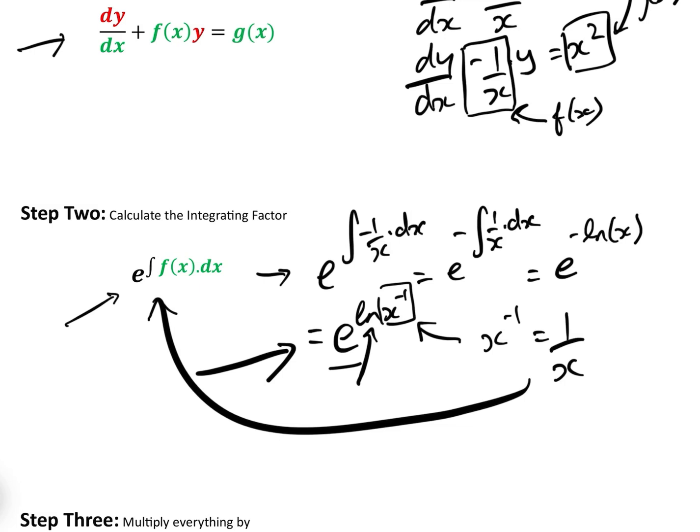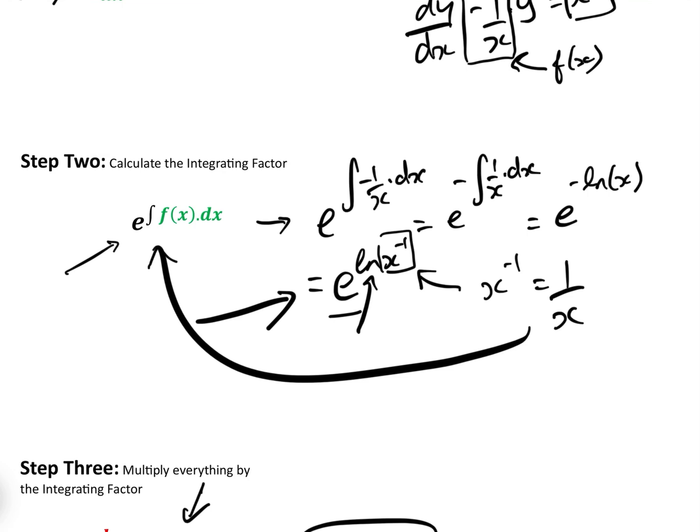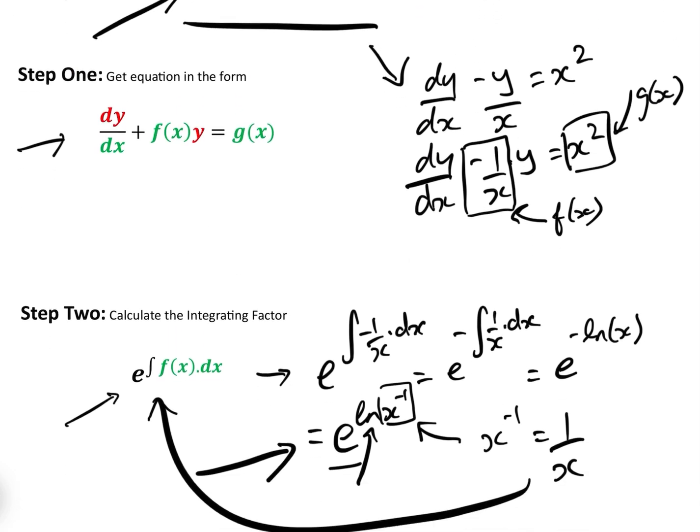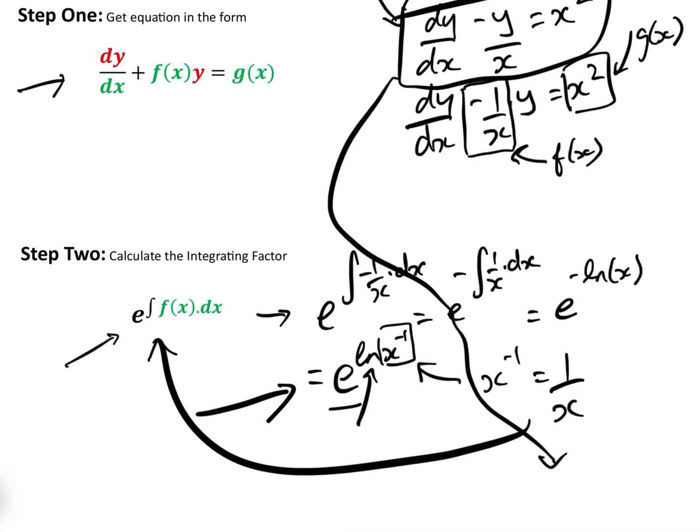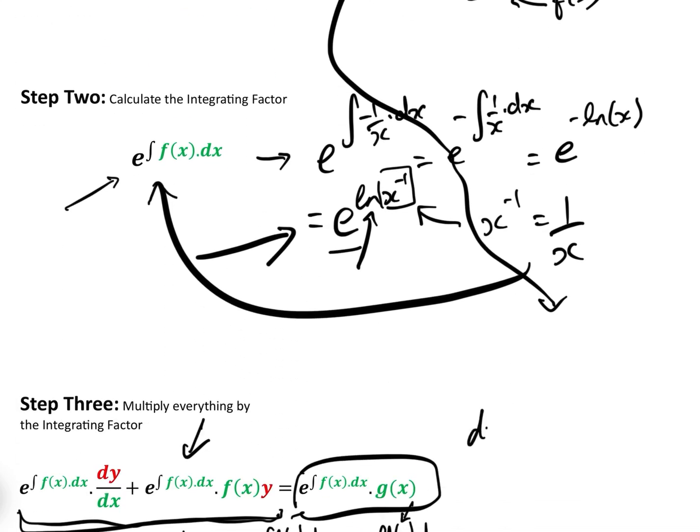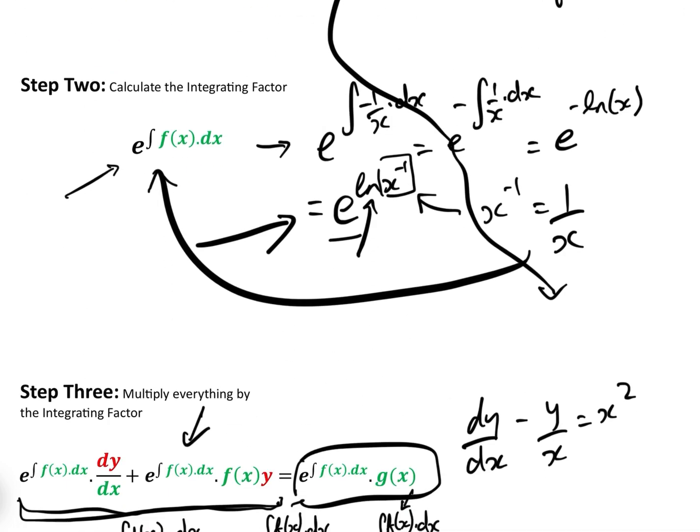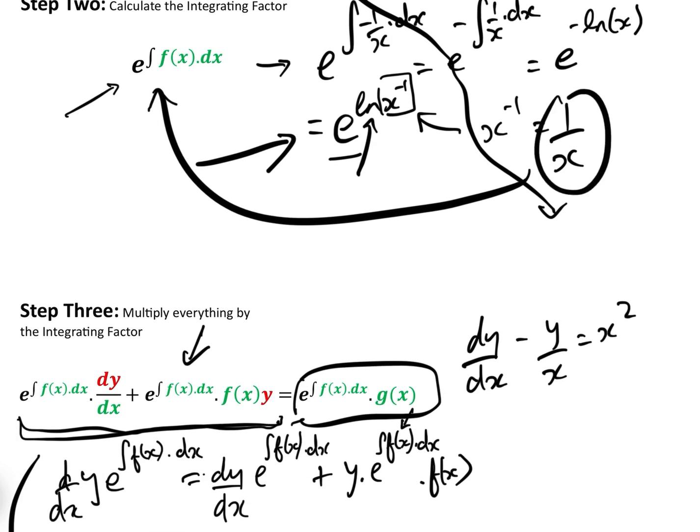So, step three, we multiply everything by the integrating factor. So, here, let's bring this equation down. That's dy dx minus y over x is x squared. So, we have 1 over x dy dx minus y over x squared equals x squared. That's what we had, wasn't it? Yep, and we have to multiply everything by the integrating factor.